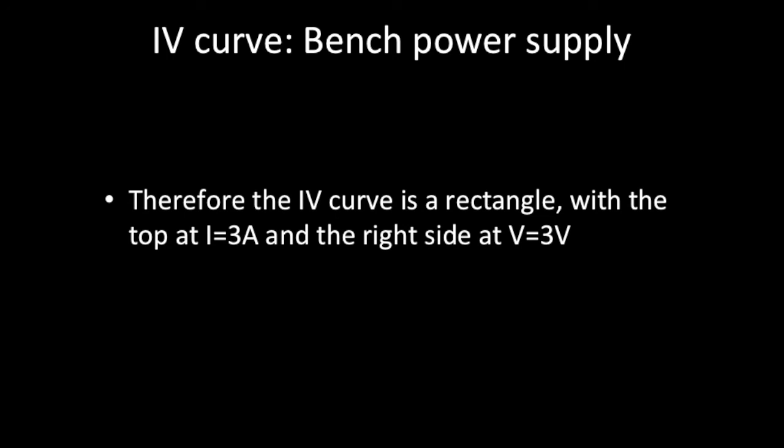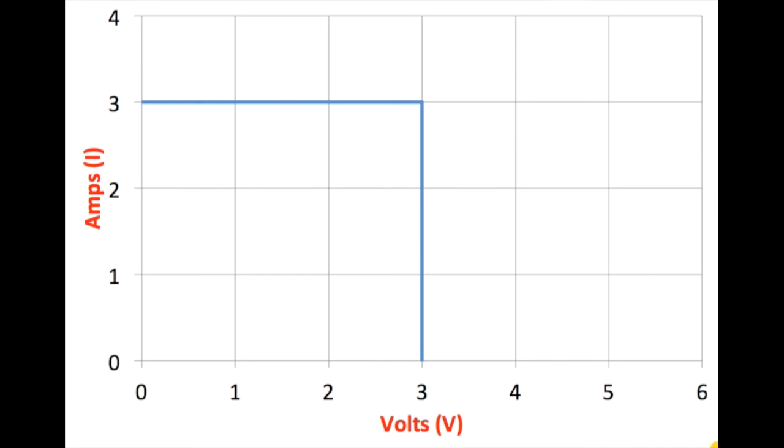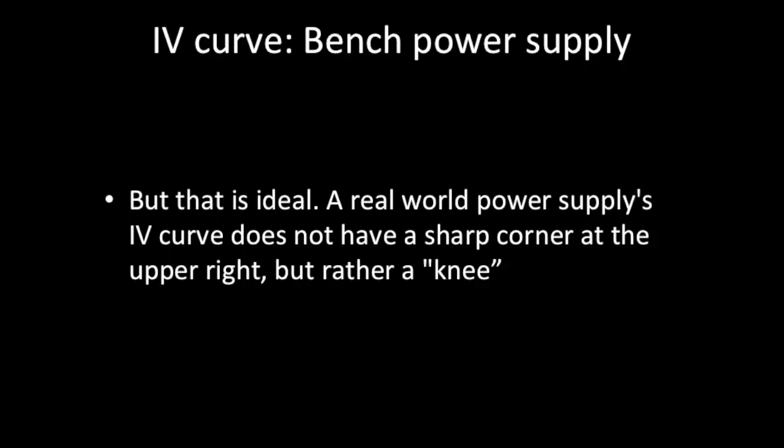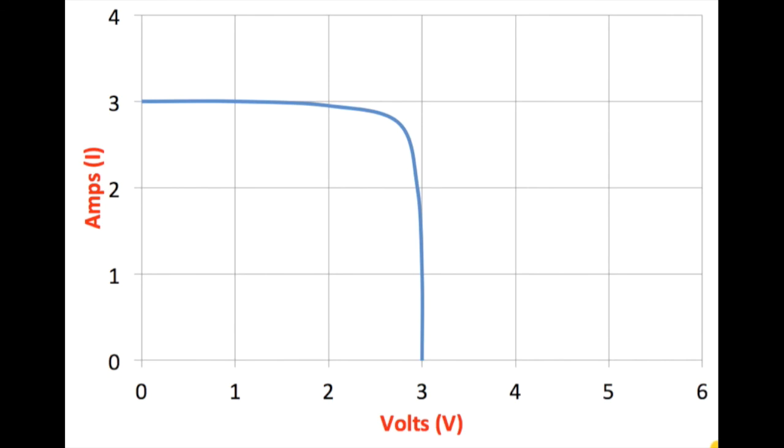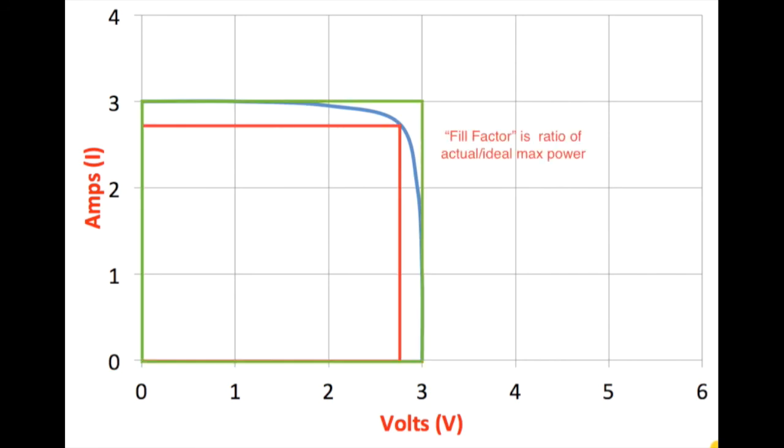So therefore the curve, if we actually plotted those points out, is a rectangle at the top at 3 amps and the right side at 3 volts. So here's a drawing of that. So that's what the power supply is actually attempting to do, and what its IV curve looks like. So the only catch is that's ideal real-world power supply. You actually have a little bit of what you call a knee in the upper right. This is an exaggeration, but it sort of bends rather than goes to a sharp corner. And there's something called fill factor, which would be the ratio of the actual power, which is the red square, to the ideal max power, which is the green square.